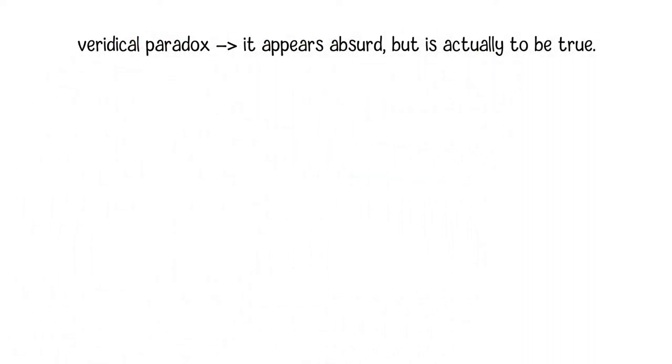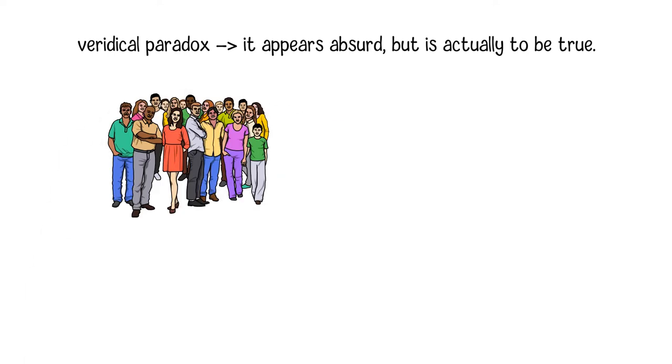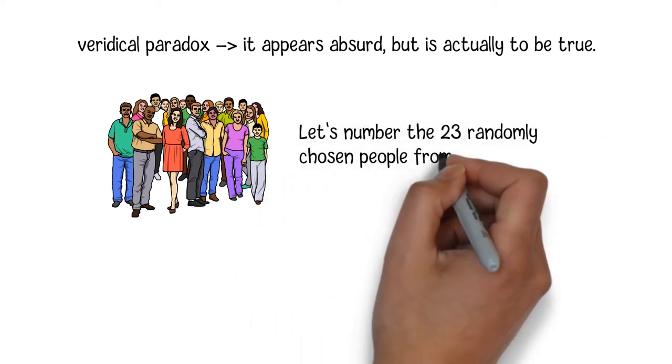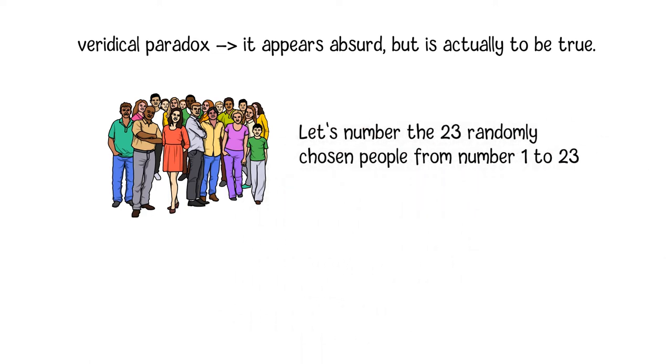This birthday paradox is a famous veridical paradox, which means that it appears absurd but is actually true. Let's illustrate the mathematical calculation of the probability. Let's number the 23 randomly chosen people from number 1 to 23.